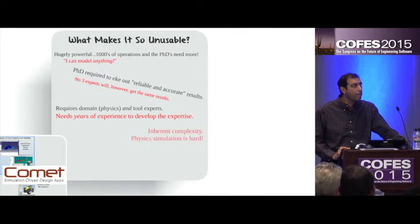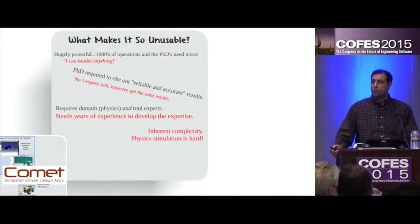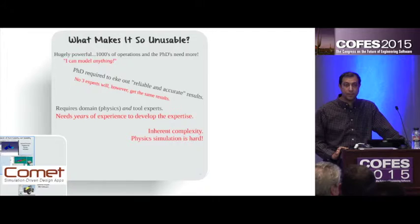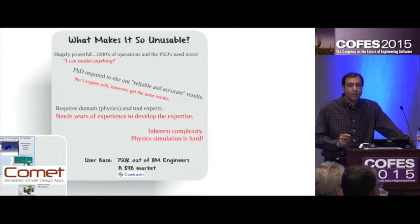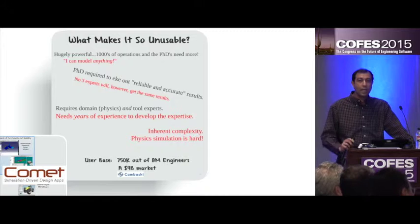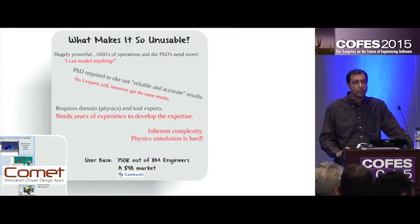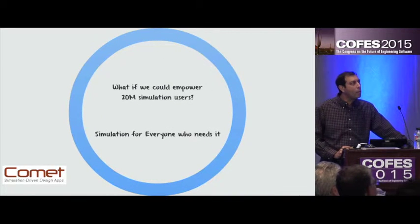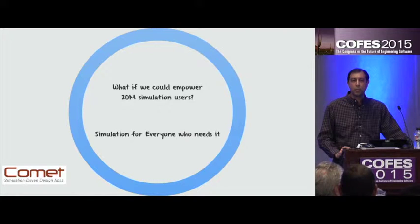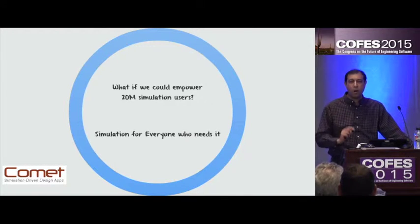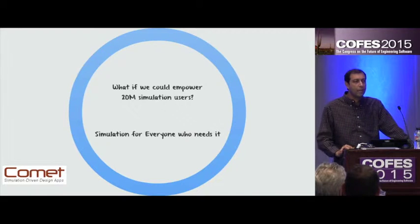Let's face it — there's inherent complexity in what's being solved here. Physics simulation is simply hard. So what's the result? About 750,000 simulation users out of a pool of 8 million engineers, and that doesn't include the rest of the product development folks. And a $4 billion market — not bad, but Salesforce already dwarfs that, and that's one application. What if we were able to empower everyone that needs simulation — every single person in the product development organization?